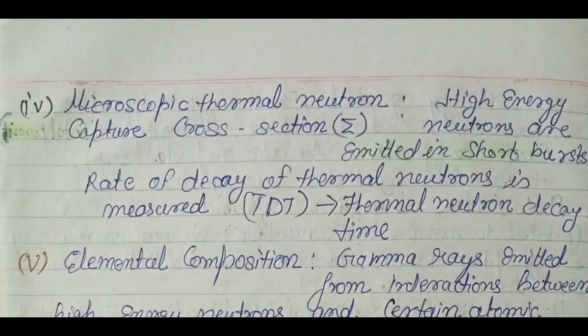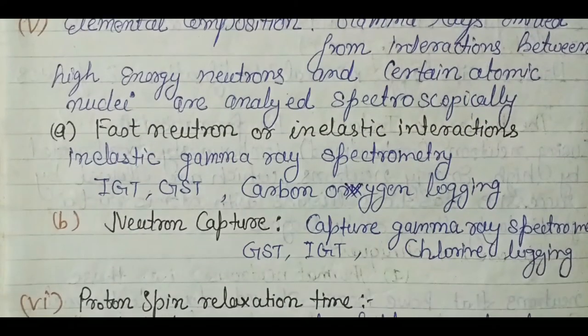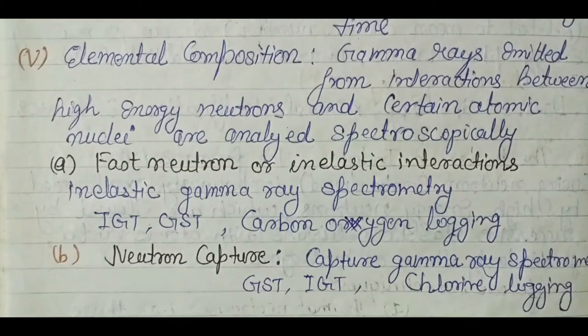There are also advanced neutron logs that may be included in GATE syllabus. In pulsed neutron logging, high-energy neutrons are emitted in short bursts and the rate of neutron decay is measured, giving thermal neutron decay time. Fast neutron inelastic interaction is also measured, and there is carbon-oxygen logging. Neutron capture gamma ray spectrometry is another technique covered at advanced levels.